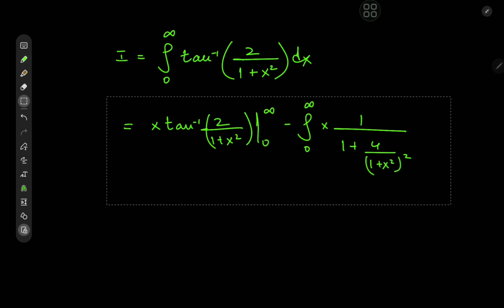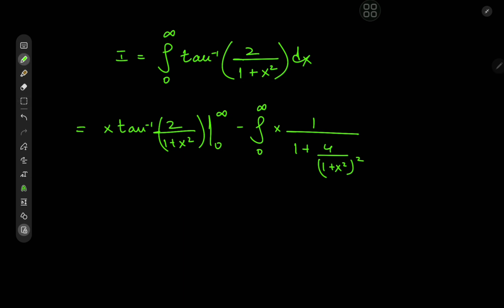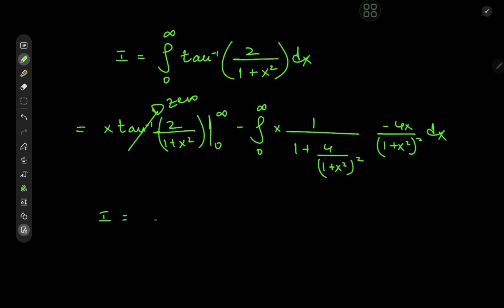By the chain rule I have to differentiate the argument of the inverse tangent, giving negative 2 divided by 1 plus x squared squared, with a 2x from the derivative of x squared — so I get negative 4x up top. It's quite trivial to show that the boundary term converges to 0 in both limits. So I here is the integral from 0 to infinity, with the negatives cancelling out nicely, giving 4 times the integral of x squared divided by...